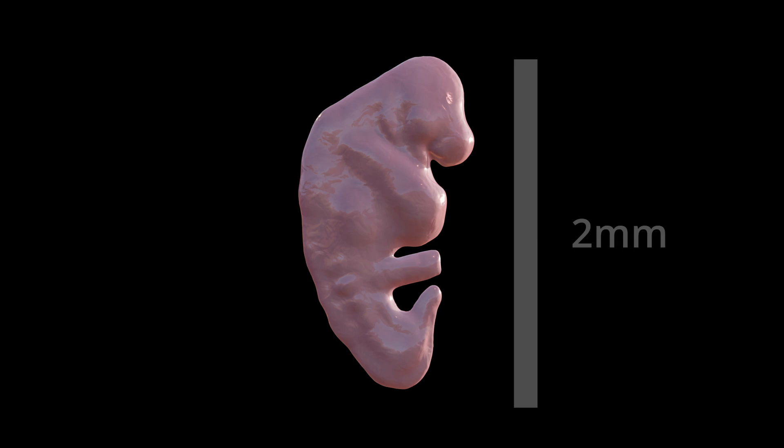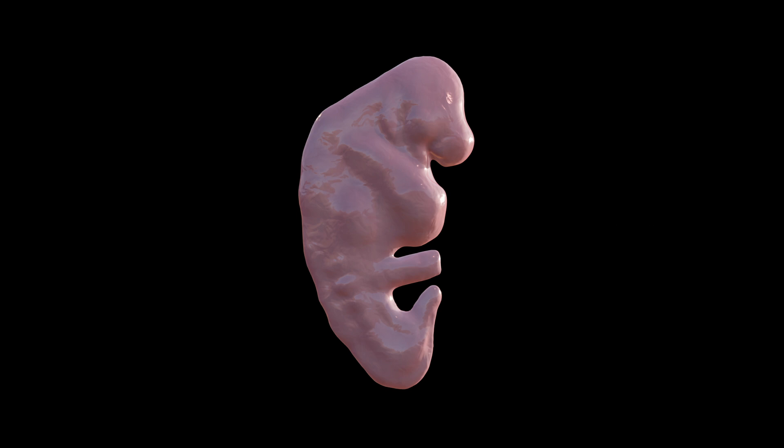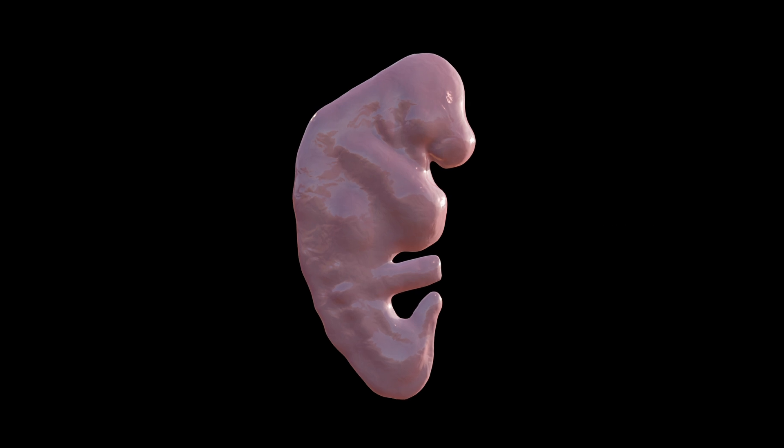Our story begins in the fourth week of embryonic development. Picture this, I was just a tiny two millimeter long embryo with my head starting to fold forward and expand. Adorable, right? That folding process lays the groundwork for the pharyngeal apparatus to form.